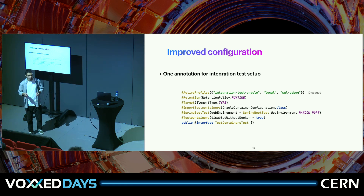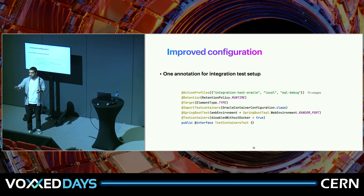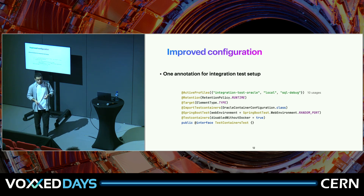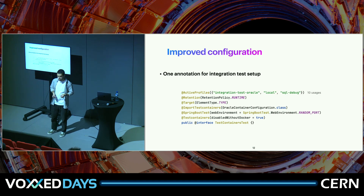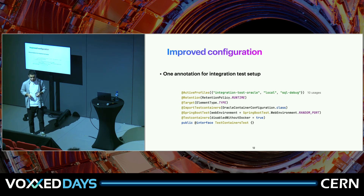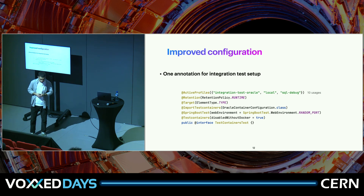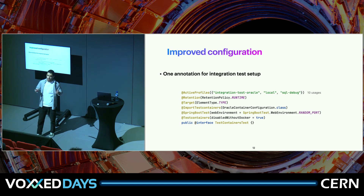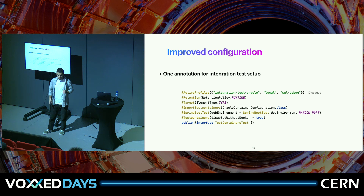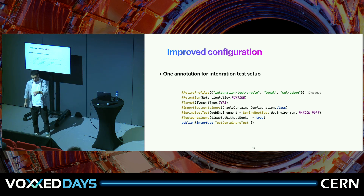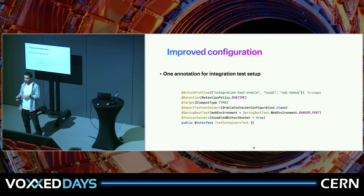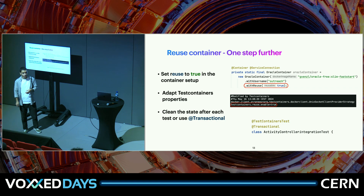From there, we created a custom annotation so developers can do the bare minimum to write integration tests — just annotate a class and have the container ready. The annotation includes active profiles for Liquibase, SQL debug logging, and some local run settings. It also sets retention to runtime, targets element type annotation on classes, imports our container config, configures a random web server port, and uses @EnabledIfDockerAvailable to skip tests on machines without Docker.